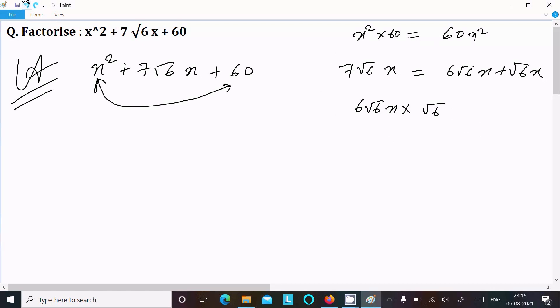Now thereafter we can write this one: 5√6x + 2√6x, so that is now 7√6x. And now here 5√6x into 2√6x.